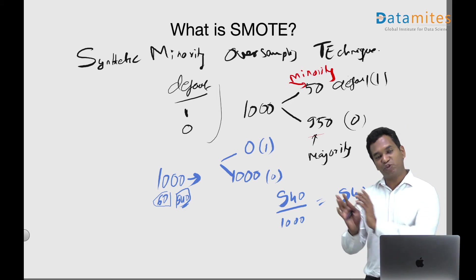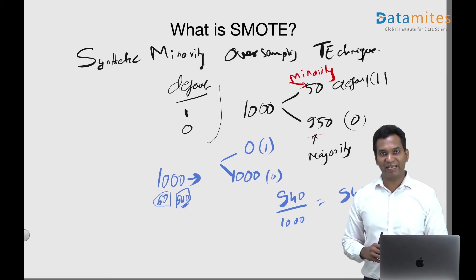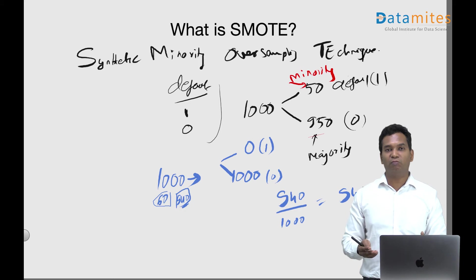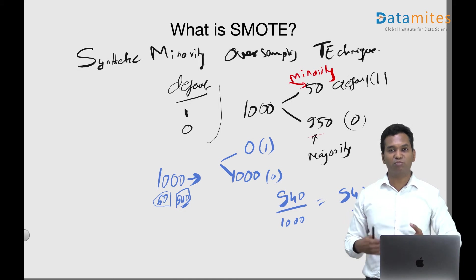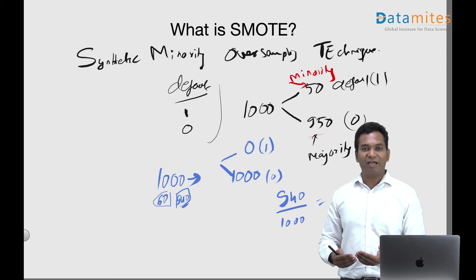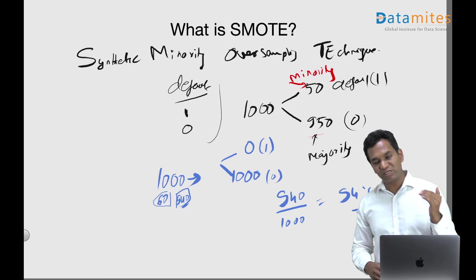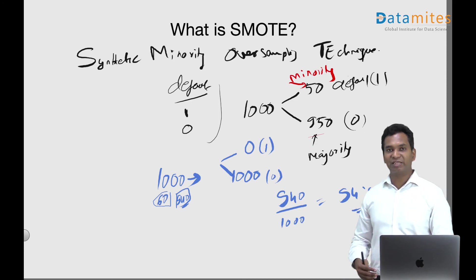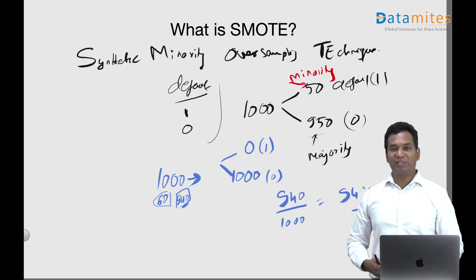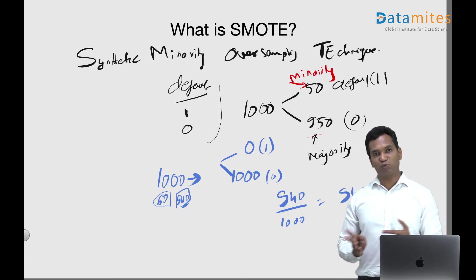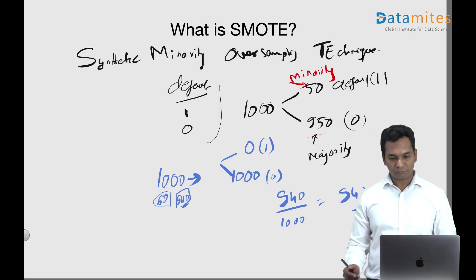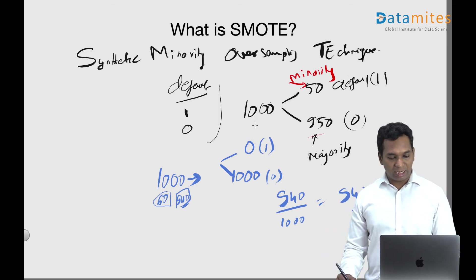So the model has every incentive to bias toward the majority class, because the goal of most machine learning models is to maximize accuracy, and biasing toward the majority class achieves exactly that.